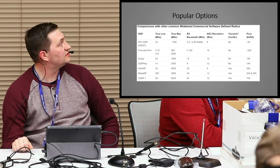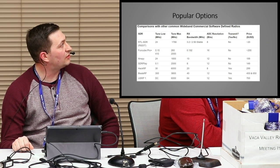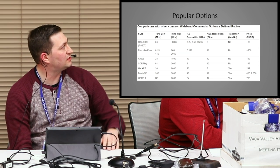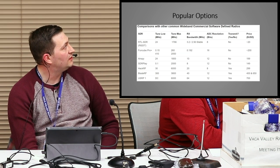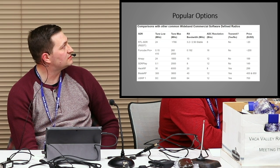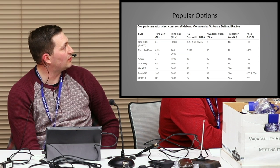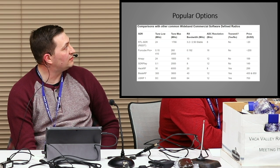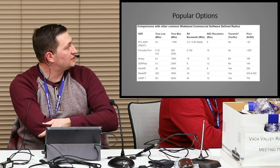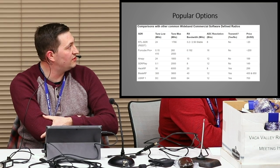Here are the popular options. The range on them kind of coincides with the price. The most popular one goes for about $20 to $30 with antennas — they have telescoping or fixed ones. It starts off covering 24 MHz to 1.7 GHz. Then there's the SDR Play, which goes from 0.1 to 2 GHz. And then at the top end, it goes all the way up to 6 GHz, and you can see the price increase as you go along.